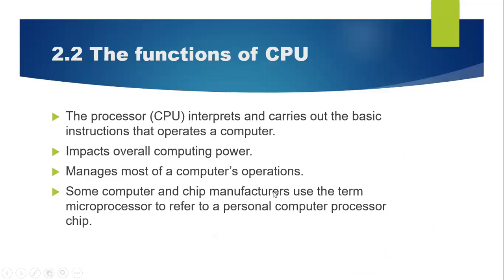Then we go to 2.2, the CPU — CPU ni lah yang processor tadi tu. The processor CPU function dia adalah untuk interpret, menterjemah, and carries out the basic instruction that operates a computer. Dia menjalankan sebarang arahan yang kita masukkan supaya computer tu boleh berfungsi dengan baik. So keywords dia ialah interpret and carry out basic instruction supaya computer beroperasi dengan baik.